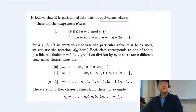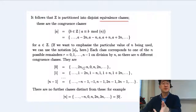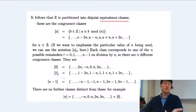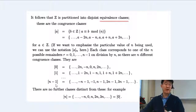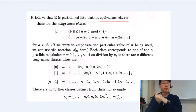For example, what is congruent to 0? Anything that is a multiple of n. Then there's remainder 1, and anything that has remainder n minus 1 when divided by n. Those are called the equivalence congruence classes.